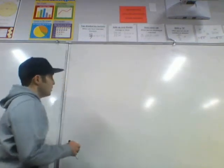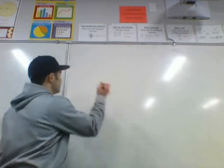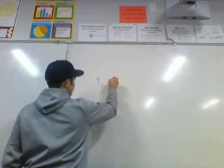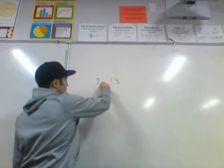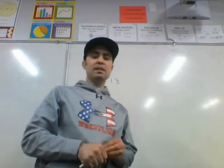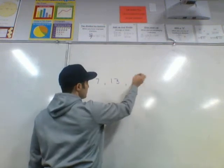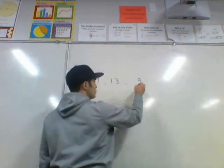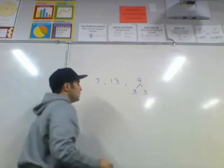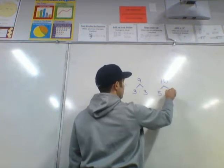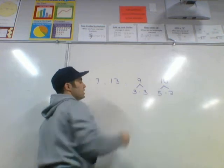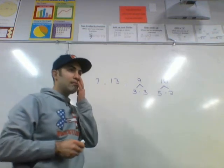Every whole number greater than 1 is either a composite number or a prime number. A prime number is a number that cannot be divided — it's not composed of anything else. So if you take 7 or 13, you can't divide them and get anything other than 1 and itself. An example of a composite number would be 9, which is composed of 3 times 3, or 10, which is composed of 5 times 2.